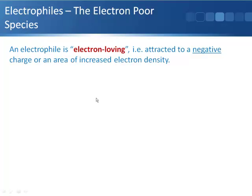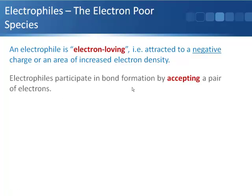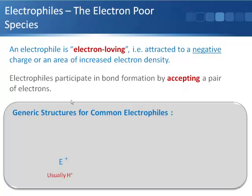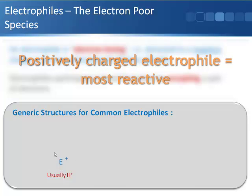We'll start with electrophiles. These are electron-poor species that are therefore electron-loving, so they're attracted to a negative charge or an area of increased electron density. The way they participate in bond formation is by accepting a pair of electrons. The three important types of electrophiles are firstly these positively charged species, which are the most reactive of the electrophiles and readily accept electrons.